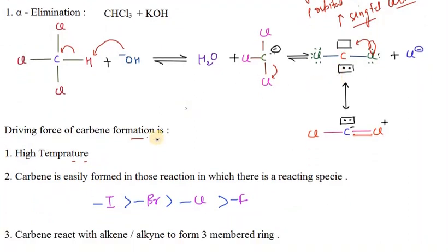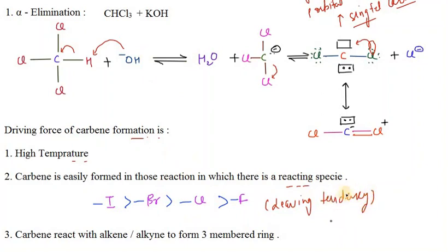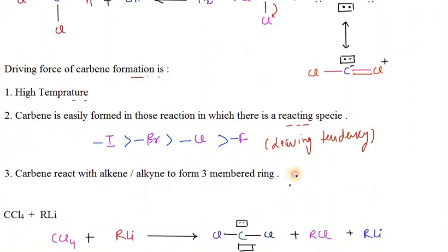If we have different halogens — iodine, bromine, fluorine — the leaving group tendency follows this order: iodine leaves first, then bromine, then chlorine, then fluorine. Carbene reacts with alkenes and alkynes to form 3-membered rings. We will see the reaction where carbene reacts with a double bond — alkene and carbene react with alkyne — and it can attach over the alkyne. These reactions will be seen further.